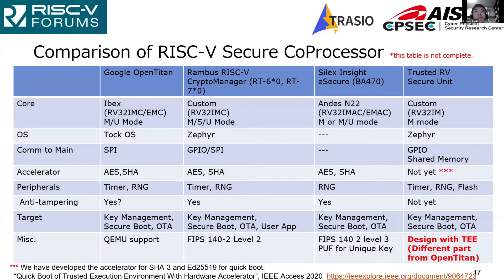This slide compares other security coprocessors. The targets are Google OpenTitan, Rambus RISC-V Crypto Manager, Cyrex Insight eSecure, and our trusted RB. The designs are almost the same. The main difference of trusted RB is that it is designed based on TEE.